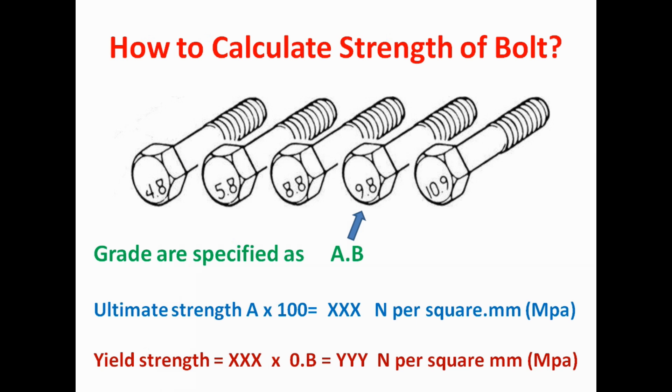This is the formula. These numbers are written in the format A dot B. First number, then dot, then second number. For calculating ultimate strength, our formula is A times 100.